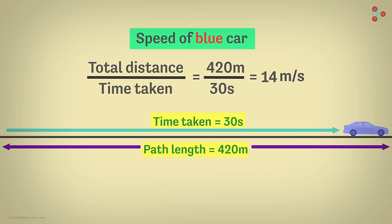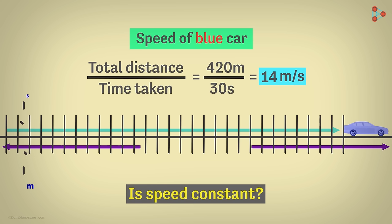I want you to answer the next question I am asking you. In this example, can we say that the speed of car A is constant throughout this distance? Are we saying that the car is covering 14 meters every second throughout the path? No, that's not what we are implying.